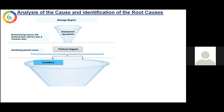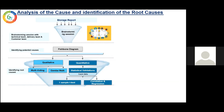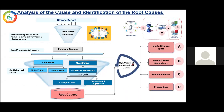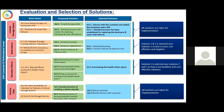To summarize the Analyze phase: we started with a brainstorming session, then put all causes into a fishbone diagram. The causes were divided into two categories — qualitative and quantitative. For qualitative, we did multi-voting and a Gemba walk. For quantitative, we used statistical tools such as one-sample t-test, correlation, and regression. All our root causes can be bifurcated into four main categories: limited storage space, network-level redundancy, mundane efforts, and process gaps. For evaluation and selection of solutions, we conducted a brainstorming session and through technical discussions identified the solutions for improvement and implementation.